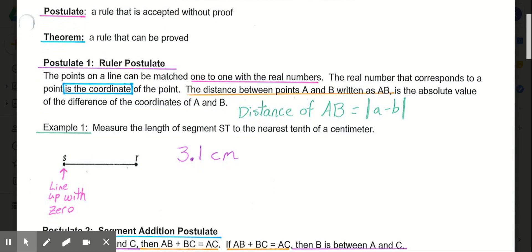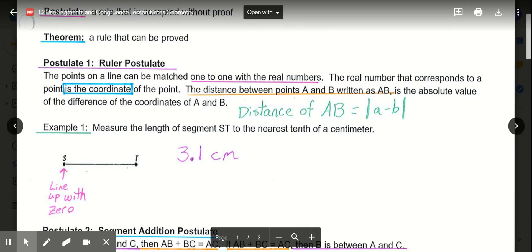So example 1 simply says measure the length of segment ST to the nearest tenth of a centimeter. So the first thing you want to do is line up your measuring tool, a ruler, with the letter S. Now, you want to line it up with the zero on your centimeter side. Now, it sounds funny to cover that you should line up the end point with zero, but if you look at the majority of rulers, the end of the ruler is not where they start measuring, so you want to be careful and line up where it starts measuring, that little hash mark by zero, with your end point.